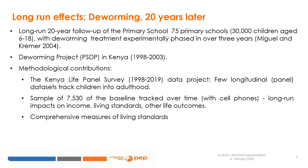There are few longitudinal databases that track children into adulthood, even less so in Africa. This was a sample of more than 7,500 individuals tracked over time with data collected on income, living standards, and other life outcomes. The dataset is unique in that it follows individuals as they migrate within the country and outside of it by contacting them frequently over their cellular phones.